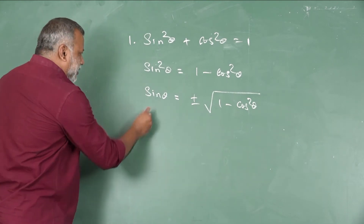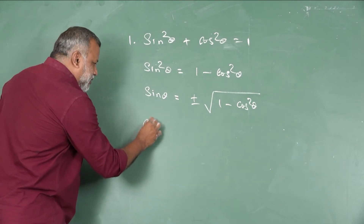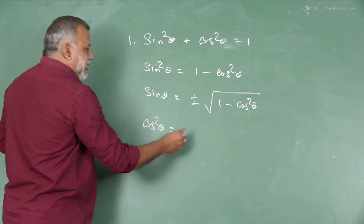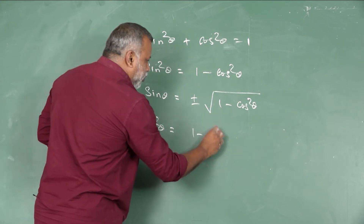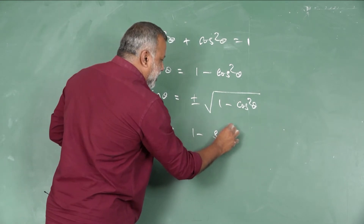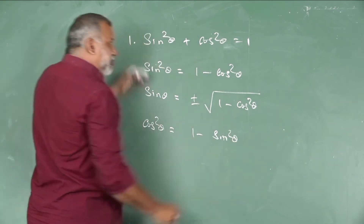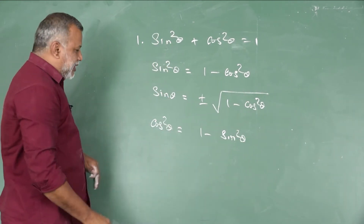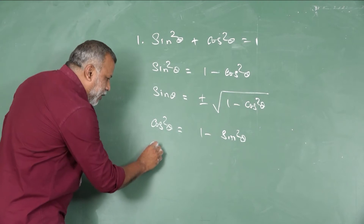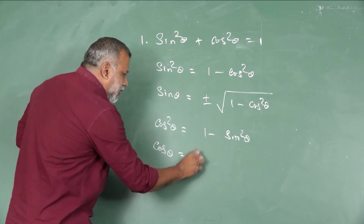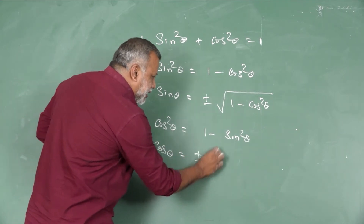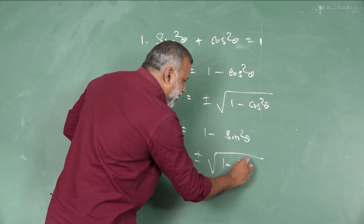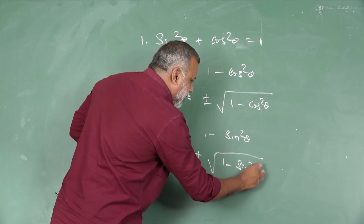In the same way, if we isolate cos²θ, we can write cos²θ = 1 − sin²θ. From this we are able to derive four sub-results. So cos θ = ±√(1 − sin²θ).